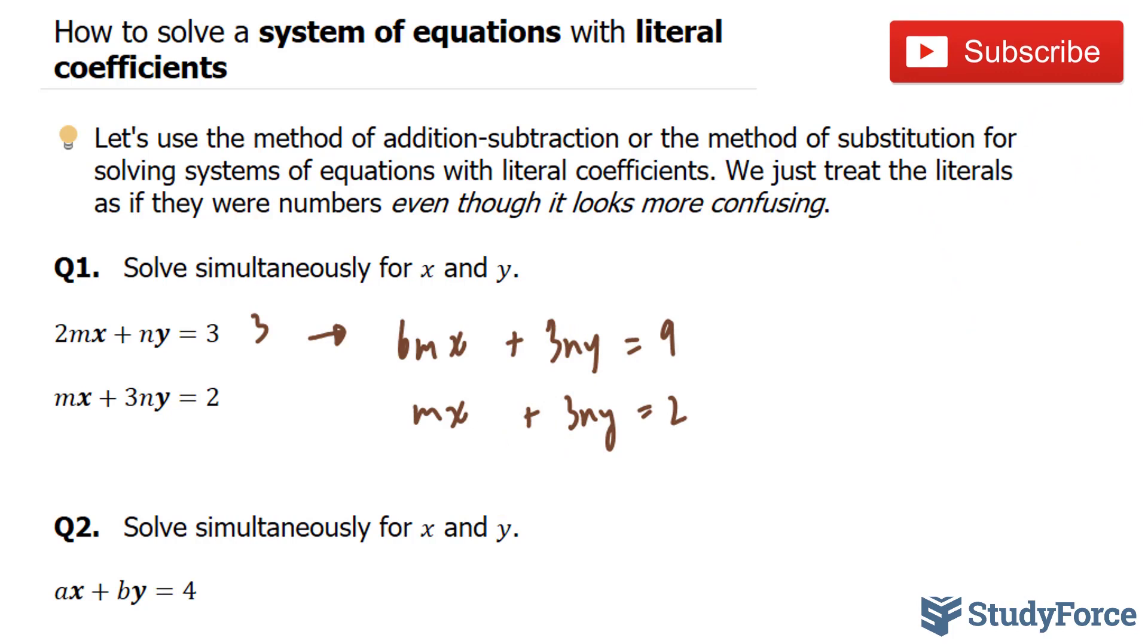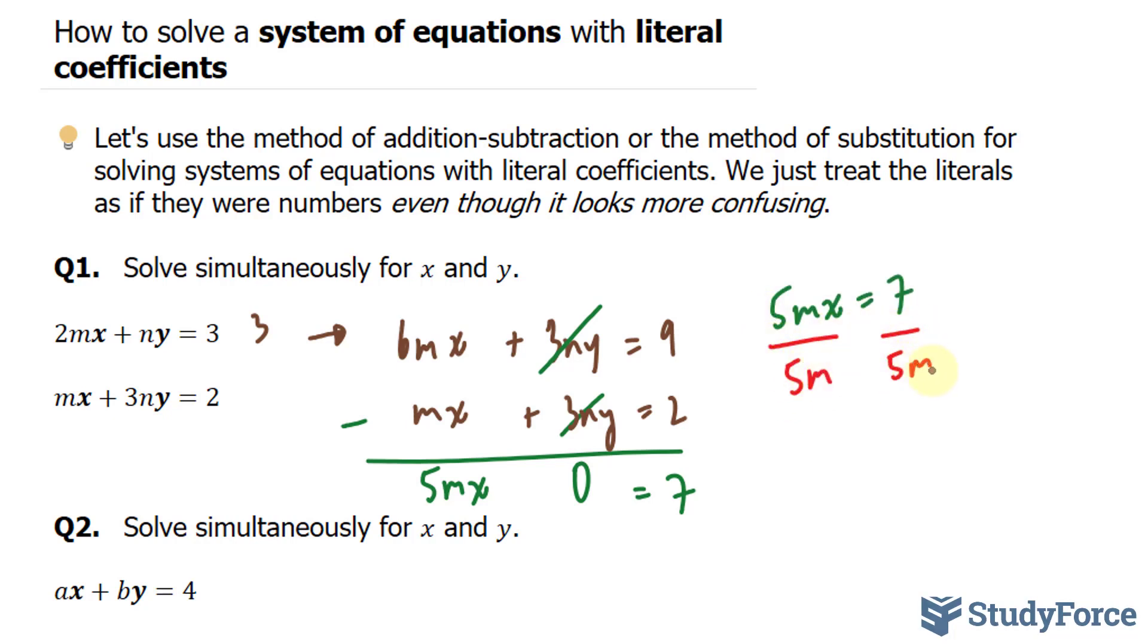Notice now that this term and this term have the exact same coefficient. So we have to choose whether to add or subtract. It turns out that subtracting will eliminate this term. So by subtracting, this becomes 0 and this becomes 5mx is equal to 7. All we have to do now is solve for x and we can do that by dividing both sides by 5m.